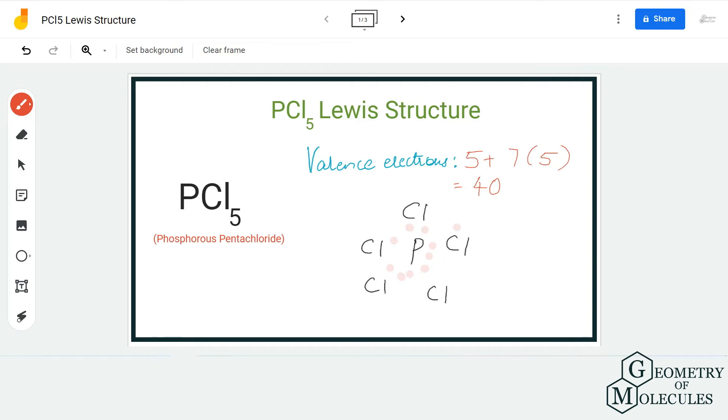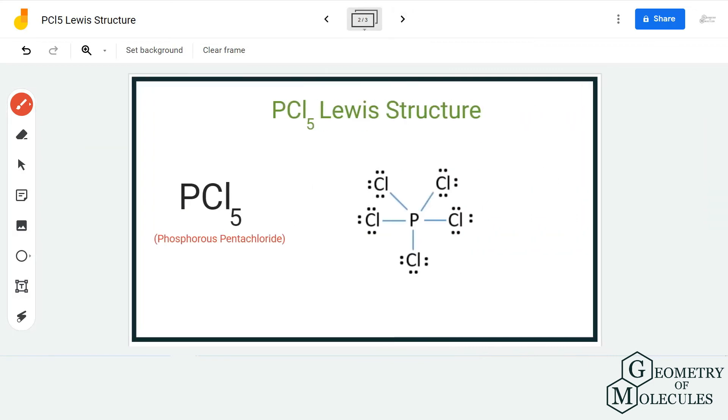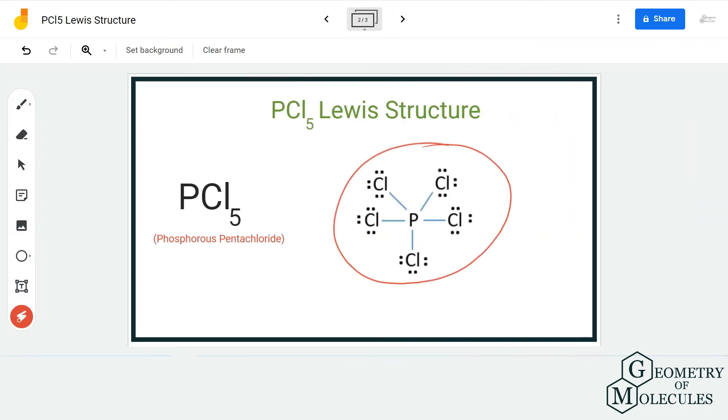As you can see, chlorine atoms only need six valence electrons each to have a complete octet. We are going to place six valence electrons around each chlorine atom. Doing that, we will be using up all our 30 valence electrons.